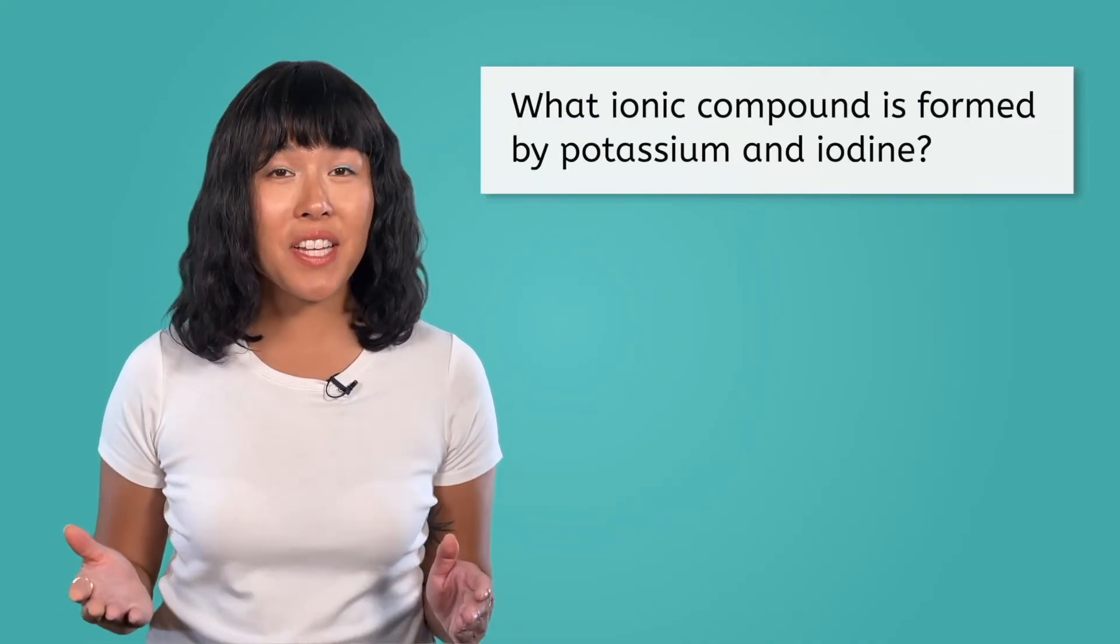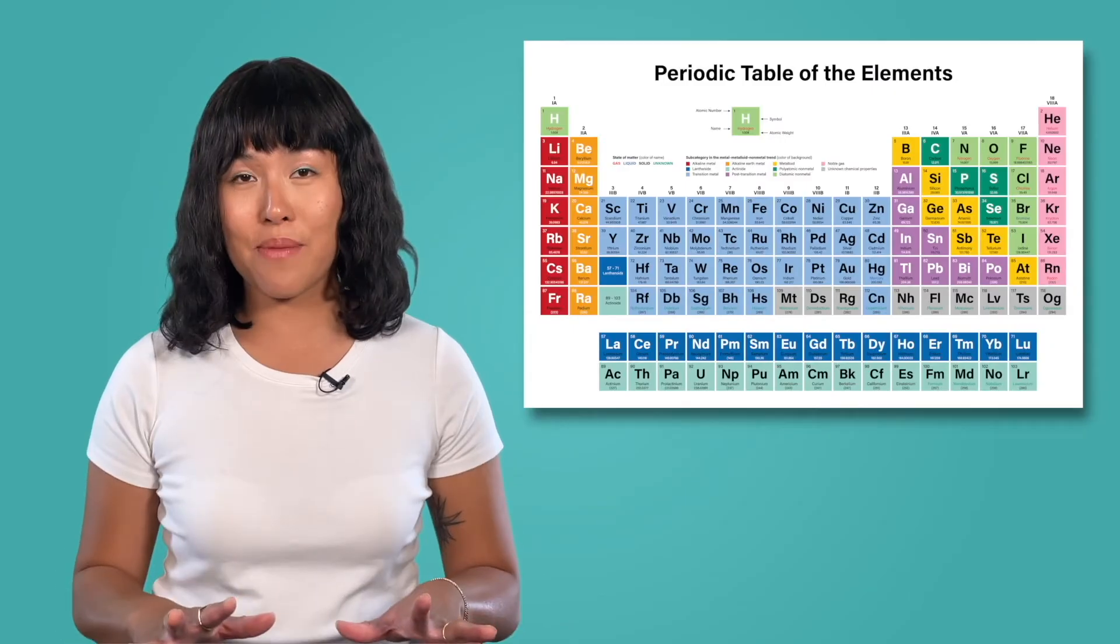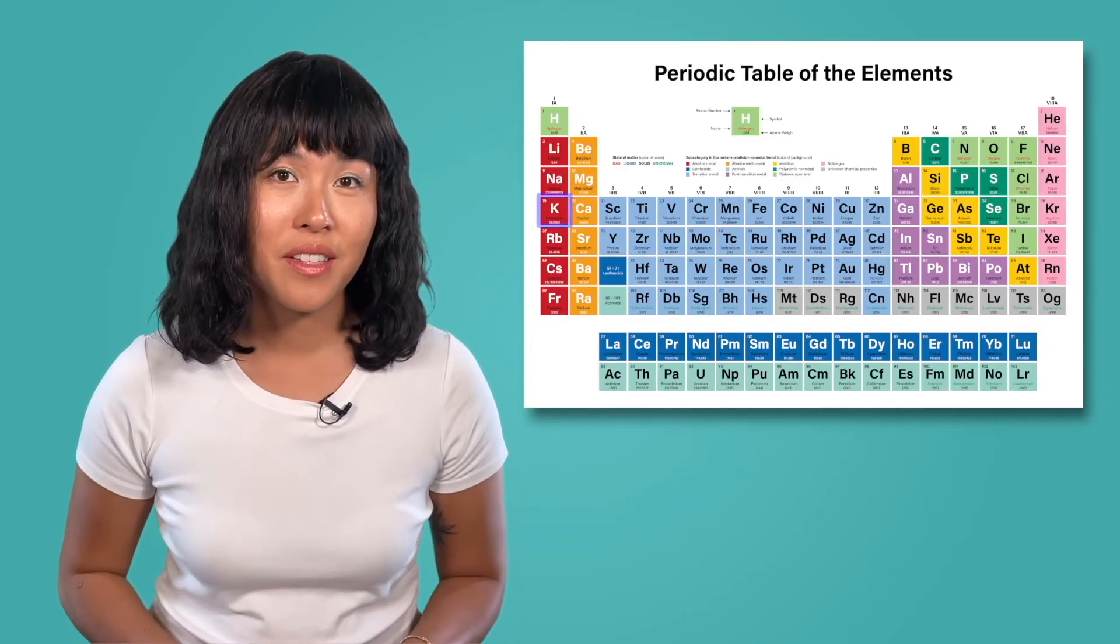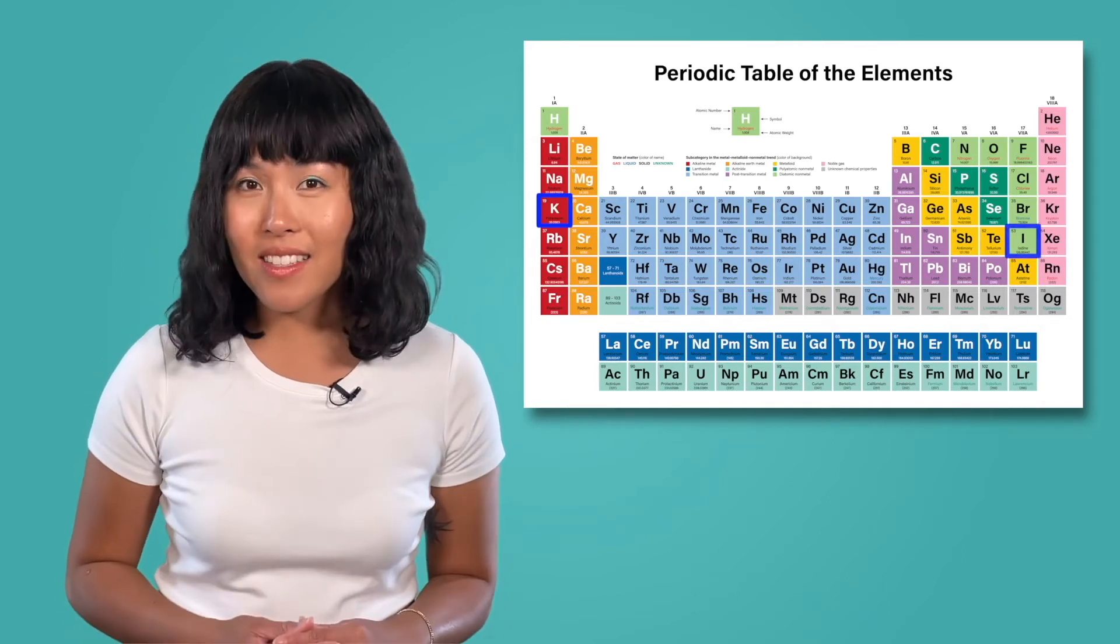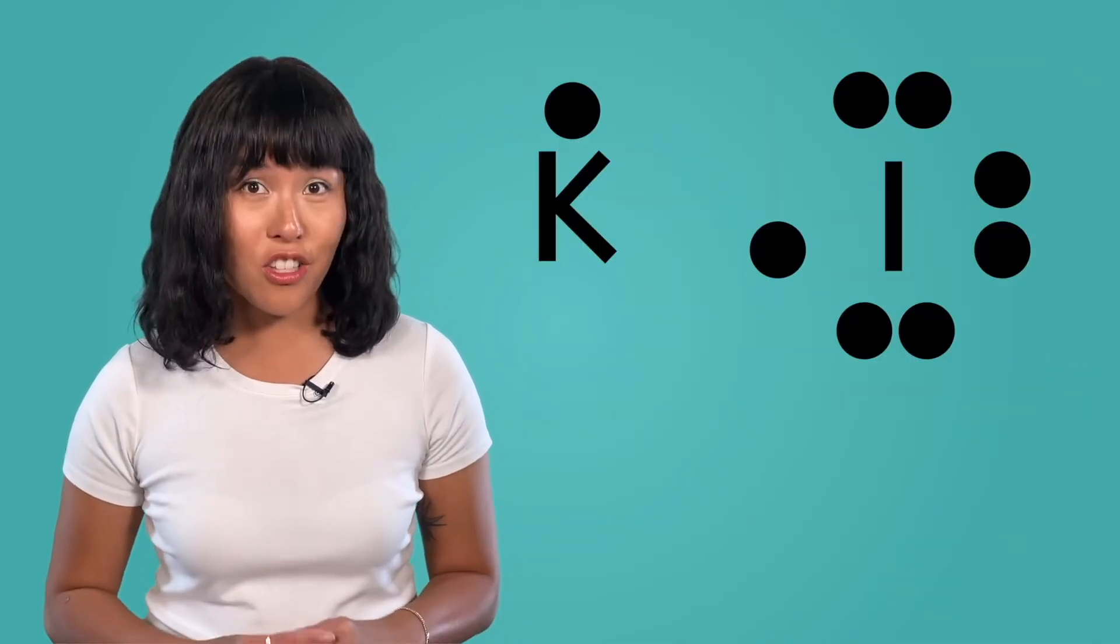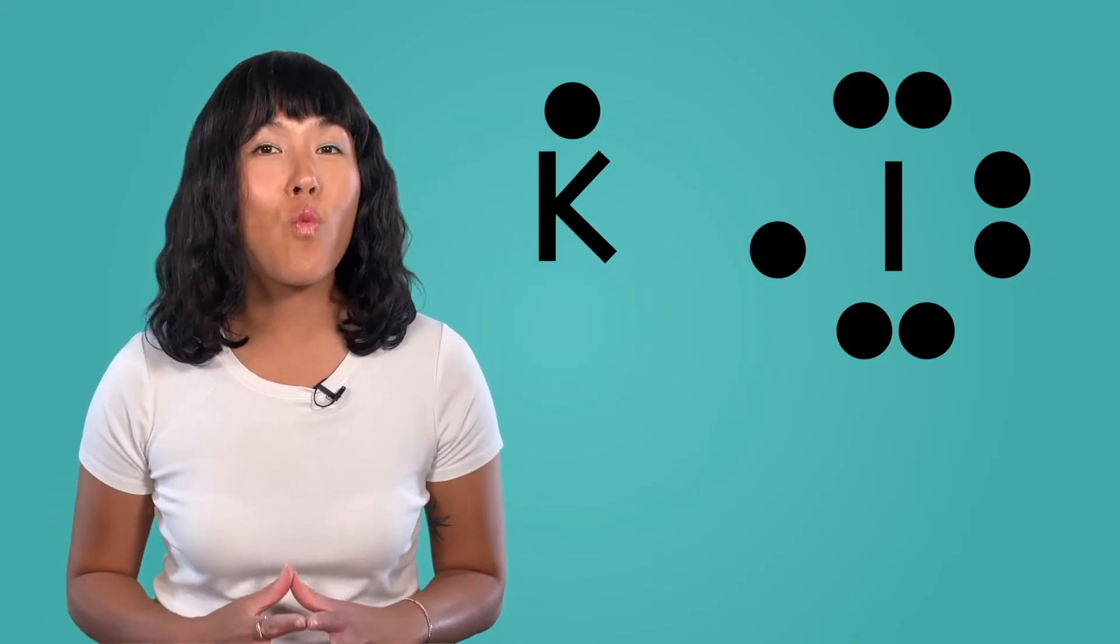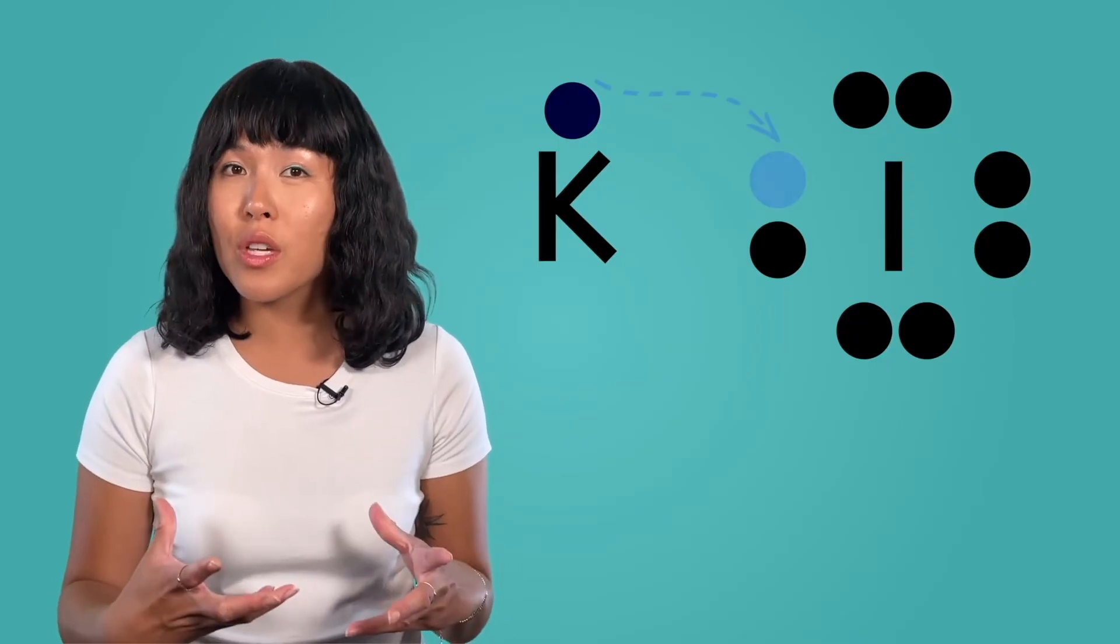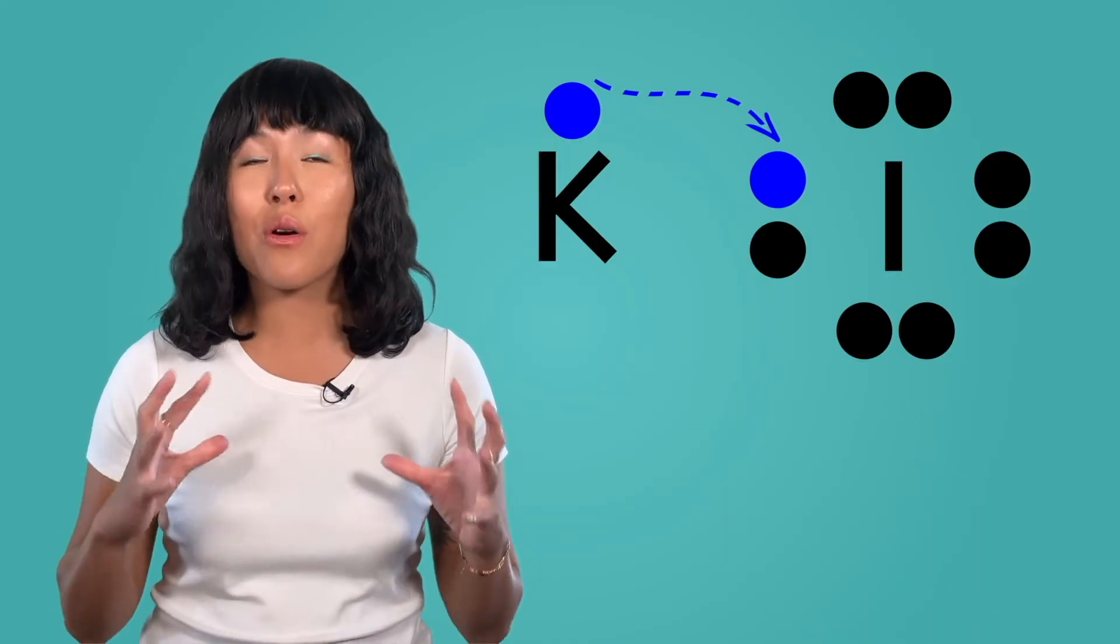Let's work through another example. How would potassium and iodine come together to form an ionic compound? First, find each element on the periodic table and draw their Lewis dot structures. Potassium's symbol is K, and is located in group 1. And iodine's symbol is I, and it is located in group 7. Once we have their Lewis dot structures, let's start transferring electrons. Potassium has one valence electron that it wants to lose, so it gives that one electron to iodine, who needs one more electron to have a full outer shell.